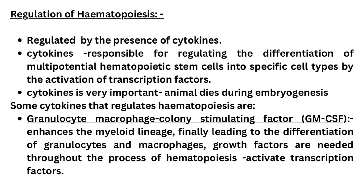Hematopoiesis is regulated by the presence of cytokines. These cytokines are responsible for regulating the differentiation of multipotential hematopoietic stem cells into specific cell types, by activation of transcription factors. These cytokines are critical for differentiation of particular cell types — without them, animals die during embryogenesis. One example is granulocyte-macrophage colony stimulating factor, which enhances the myeloid lineage, leading to the differentiation of granulocytes and macrophages. Such cytokines are termed growth factors, and they are needed throughout the process of hematopoiesis to activate transcription factors.